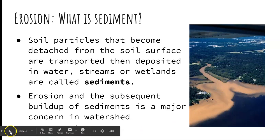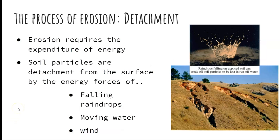Erosion requires the expenditure of energy. Soil particles are detached from the surface by the energy that comes from falling raindrops, moving water, and wind. We are going to be focusing mainly on water because this is watershed management — not to say that wind isn't going to be a factor, but we're going to mainly focus on falling raindrops and moving water.